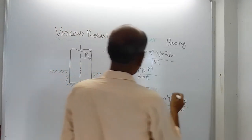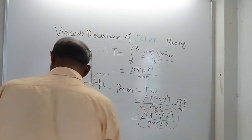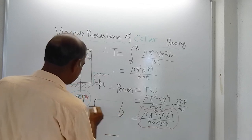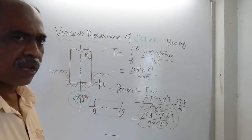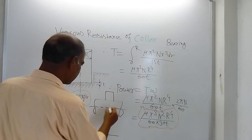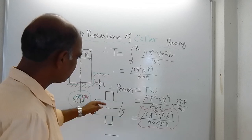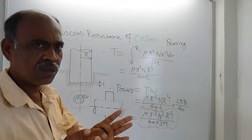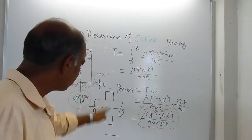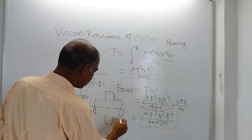So this was footstep bearing and now I am talking about collar bearing. If I draw here — this is a horizontal shaft, and somewhere on it there is a collar. This is the collar — a circular disc with a central hole. The size of the hole is the same as the size of the shaft. This is the shaft, not a pipe, and this is the collar. Here there is a bearing.